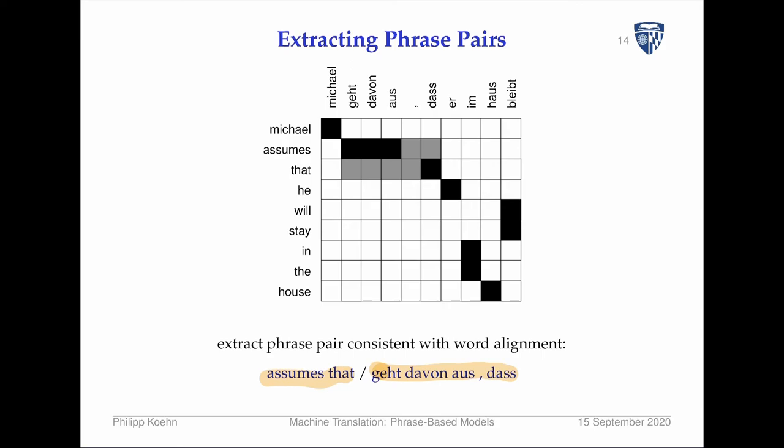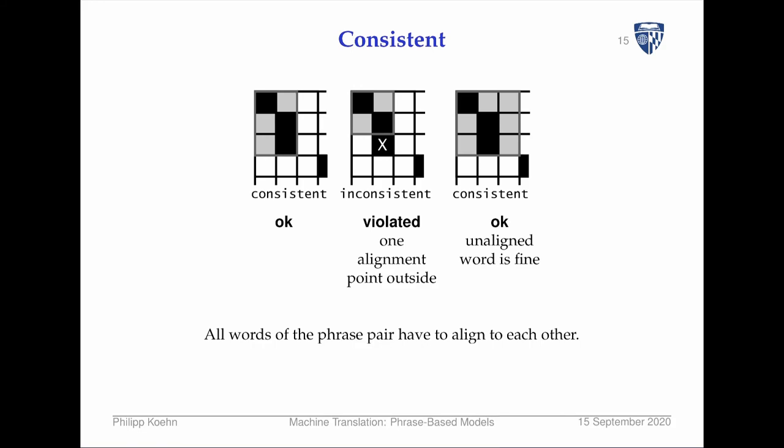This is now a longer phrase and we want it in our phrase table — we want to have as long phrases as possible, since local context helps with disambiguation. The principle we're following: we want to draw boxes that must contain at least one alignment point.